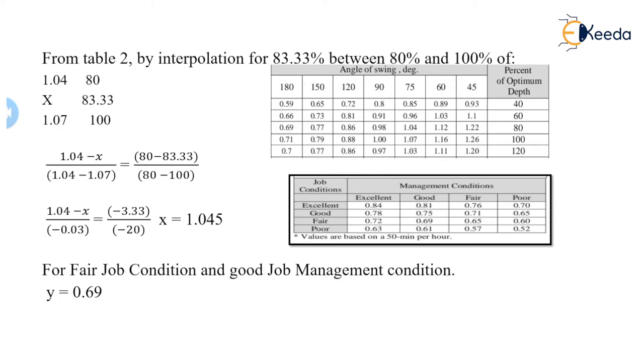Now the third one. We have given in the numerical that a fair job condition is given and a good management condition is given. Now in this table, fair job condition and good job management conditions, the value is 0.69. Fair on the left side and the management condition is on the right side. We get the value y equals 0.69.